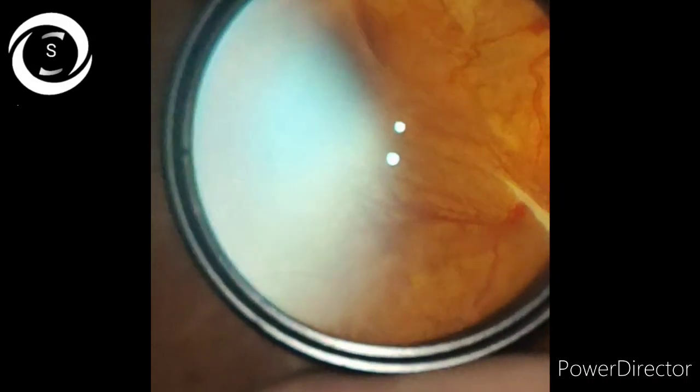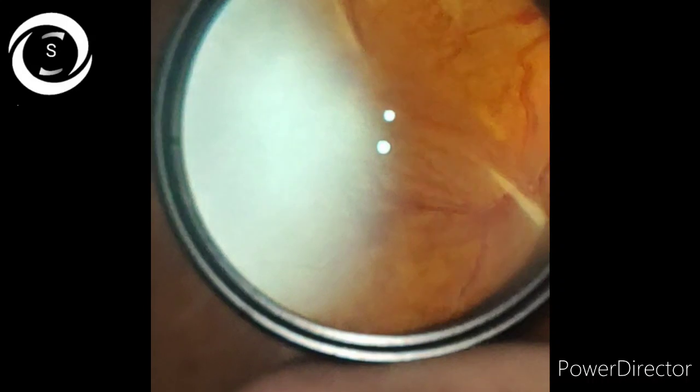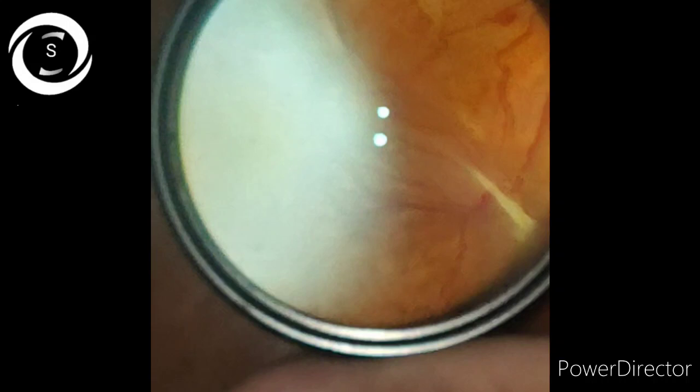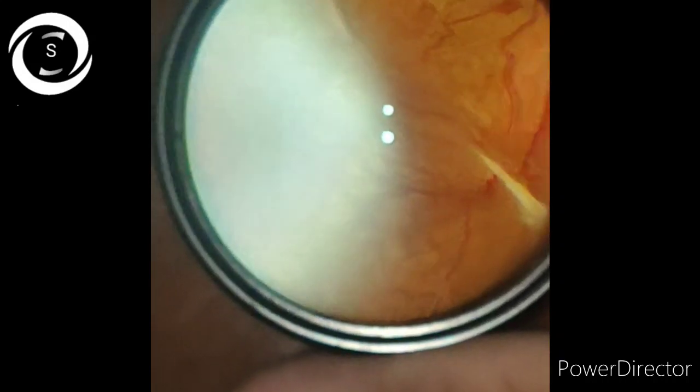He needs aggressive extensive pan-retinal photocoagulation to burn the peripheral retina to decrease the retinal ischemia - the oxygen demand of the retina. He will have to change occupation from driving because after extensive PRP, his peripheral and night vision will be limited, so there will be a risk while driving professionally.